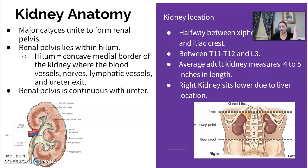The renal pelvis is continuous with the ureter, which follows down through. The kidneys are located usually between your xiphoid process and iliac crest, around T11–T12 to L3. The average adult kidney measures 4–5 inches in length. The right kidney sits lower due to the liver location.